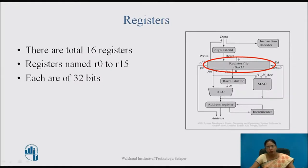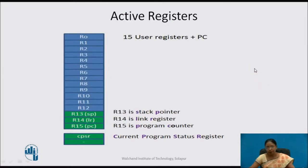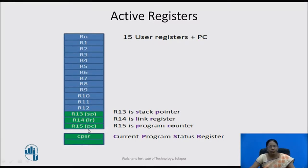We are talking in detail about the registers in this video. There are a total of 15 user registers plus PC, which is the program counter. These registers R0 to R15 are available to the programmer. R0 to R14 are the general purpose registers, and R15 is the program counter. R13, R14 and R15 are highlighted as special function registers.